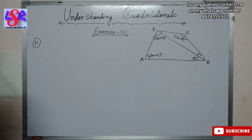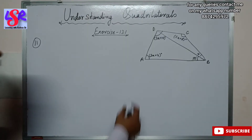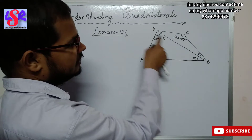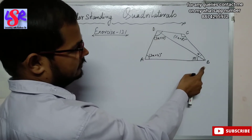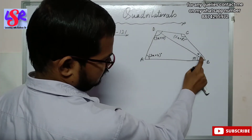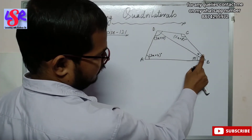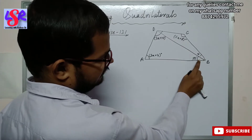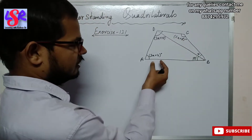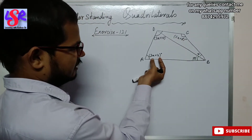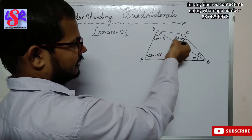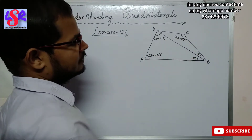In question number 11, we have been given a quadrilateral ABCD in which DB is a diagonal which divides this angle into two parts: x and 50. The rest of the angles are given in the form of algebraic expressions: 3x plus 4, 3x plus 10, and 5x plus 8.